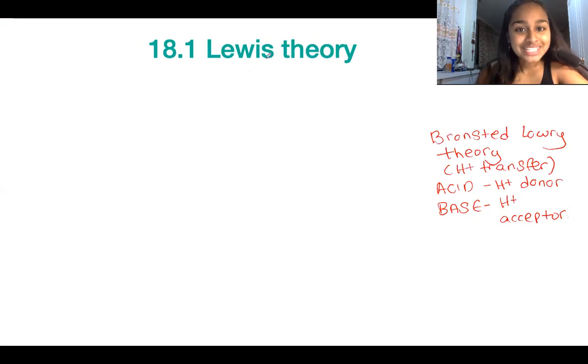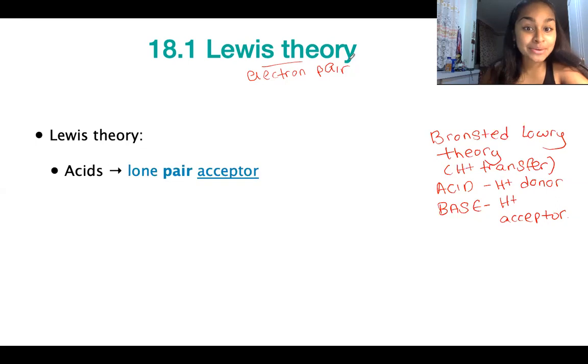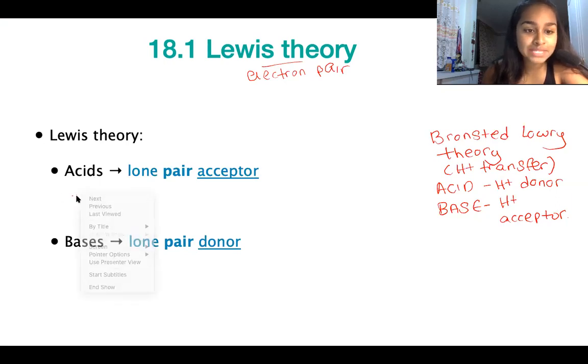So Lewis theory is a little bit more broad in that case. It's all about the transfer now of an electron pair. So if we define an acid first, so an acid is going to be a lone pair acceptor. So therefore, Lewis acids, in order to be able to accept a lone pair of electrons, they have to be positively charged.